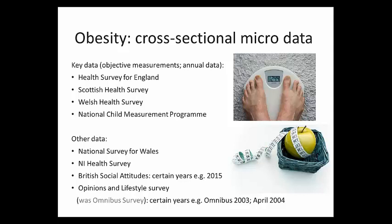These four datasets are also useful because they're annually produced, so you can get up-to-date data, compare trends over time, or pool multiple years for larger sample sizes for subpopulations. The Welsh Health Survey ended in 2015 and some questions moved to the National Survey for Wales, but that contains subjectively measured weight and height. Other datasets held at the Data Service include some obesity content but not objectively measured data, and some only ask about obesity in certain years.